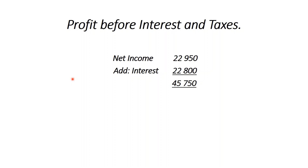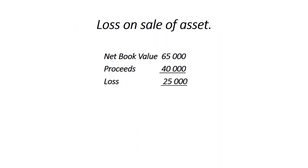First working: profit before interest and taxes. Take net income and add back interest and taxes. In this problem there are no taxes, so we add back interest only. The profit figure to start operating activities is $45,750. Second working: loss on sale of assets. Net book value $65,000 minus proceeds $40,000 = loss of $25,000. Third working: increase in current assets — from $68,900 to $98,400, an increase of $29,500.